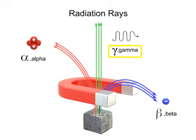Gamma rays are pure energy. Because a gamma ray has neither mass nor charge, it remains unaffected by the magnetic field.